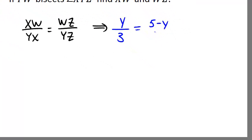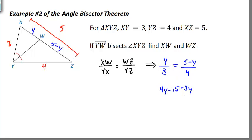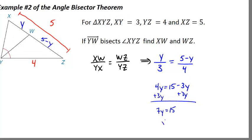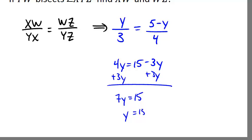So we can put that into our proportion, and YZ is 4. Again, let's solve for Y. Cross multiply: 4Y equals 15 minus 3Y. We can add 3Y to both sides.